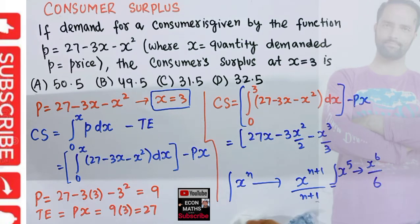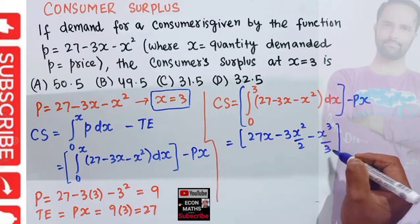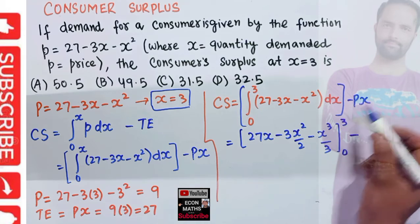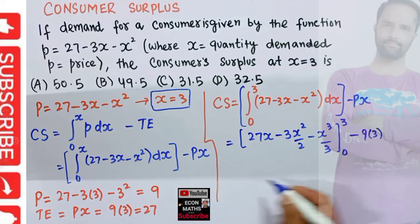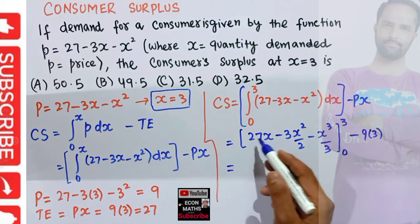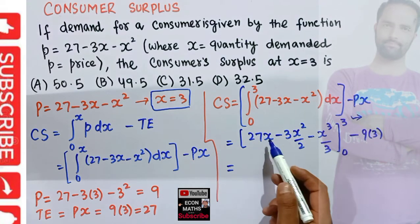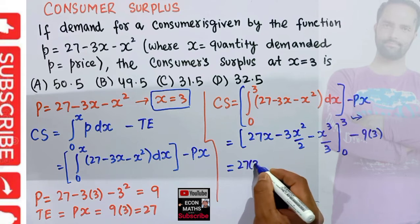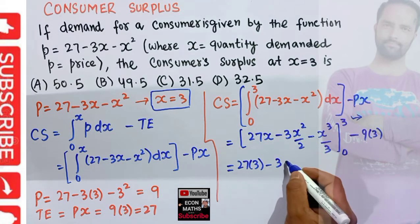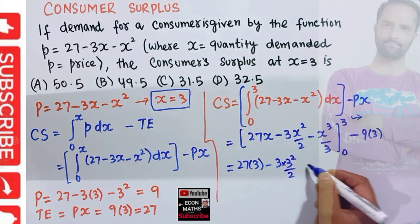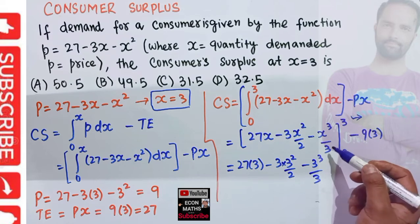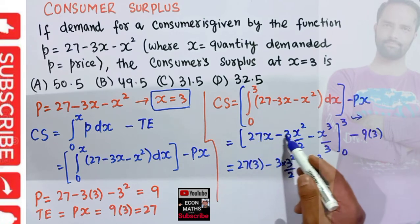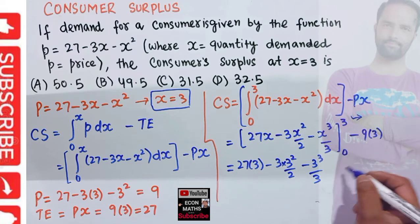We evaluate from lower limit 0 to upper limit 3, and subtract total expenditure, which is 9 times 3. Substituting X equals 3 at the upper limit: 27 times 3 minus 3 times 3 squared over 2 minus 3 cubed over 3. Since the lower limit is 0, every term becomes 0, so we do not write the lower limit evaluation.